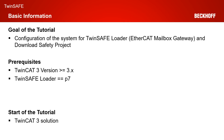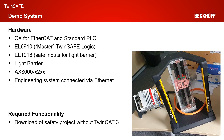The start of the tutorial today is an empty TwinCAT 3 solution. Our demo system consists of a CX for the EtherCAT communication and the standard PLC. We have an EL6910 as master TwinSAFE logic connected to an EL1918 with a light barrier, and we have an AX8000 in the X2xx version. Those components are on the target system side, and on the engineering side we have our laptop connected to the target via Ethernet.